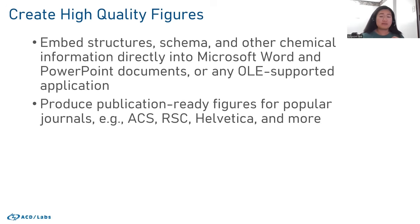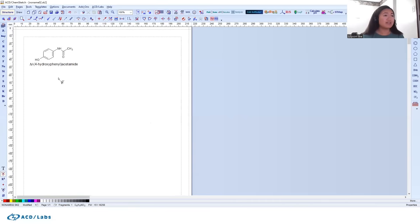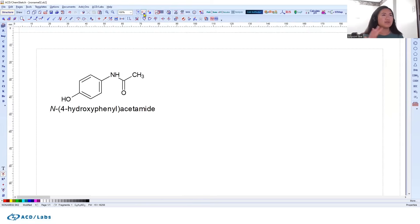are planning on creating figures for specific journals, we have the ability to change the drawing style so you can draw specifically in the journal style that you want. As a quick example, if I bring in my ChemSketch window and zoom back in, you'll see that under Options right at the top in